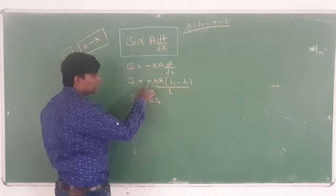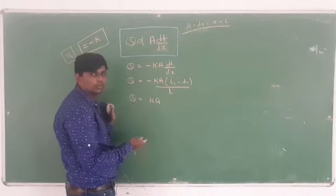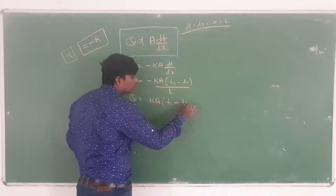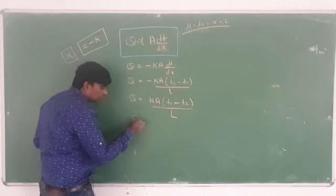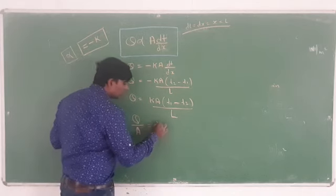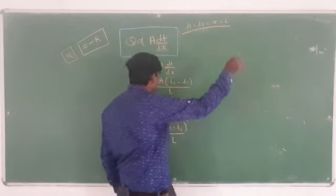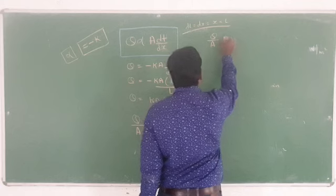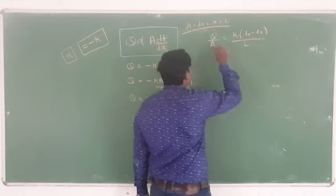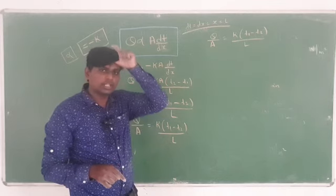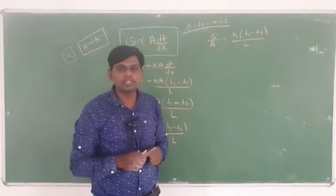Shifting A to the other side gives Q/A = K·(T1 - T2)/L. Since Q/A equals small q, we get small q = K·(T1 - T2)/L. Capital Q is heat transfer with unit watt, and small q is rate of heat transfer with unit watt per meter square.